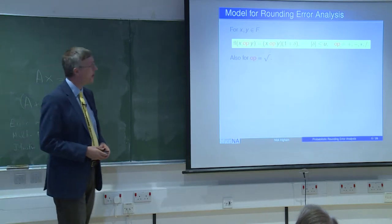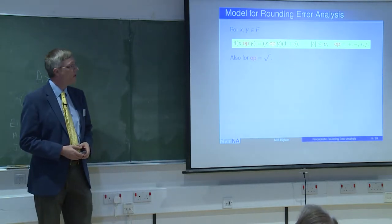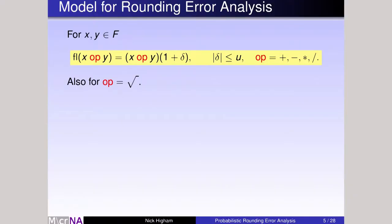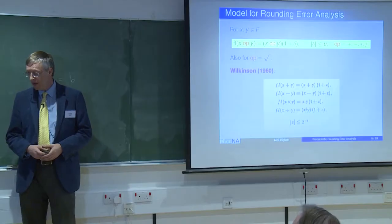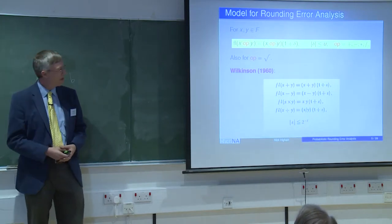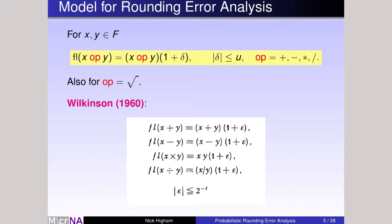Here is the model that Wilkinson used for the error in a floating point operation. Whether it's add, subtract, divide, or times, the idea is that you take your x and y, already floating point numbers, you do the operation, and the relative error delta is bounded by the unit roundoff. This has been in use now for maybe 70 years, since the beginning of digital computing. There's a little example from a 1960 paper of his. It's exactly the same as the yellow box above, except that he used epsilon instead of little u. So the question I'd like to ask is, is this model still an appropriate model? And what are its weaknesses?